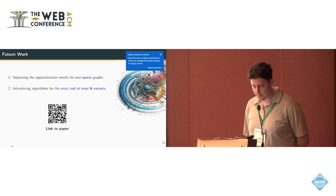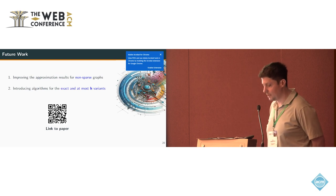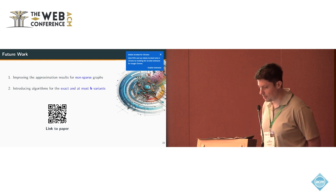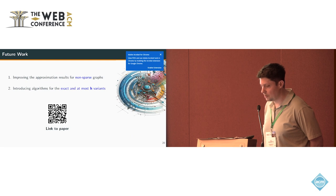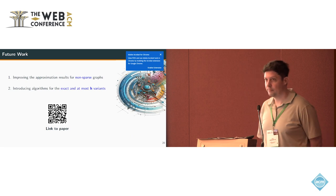In conclusion, we introduced the DSP with color requirements on the edges. In future work, we want to improve the approximation results for non-sparse graphs and introduce algorithms for the other two variants of finding color requirements that are exact or at most. Thank you.